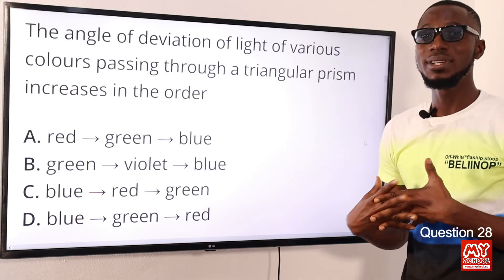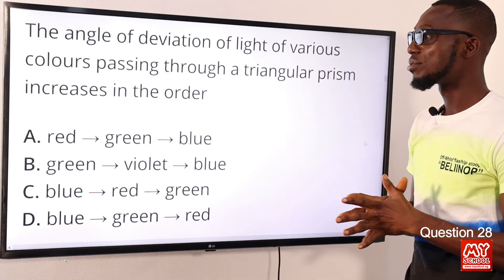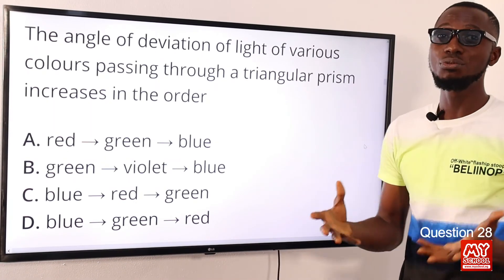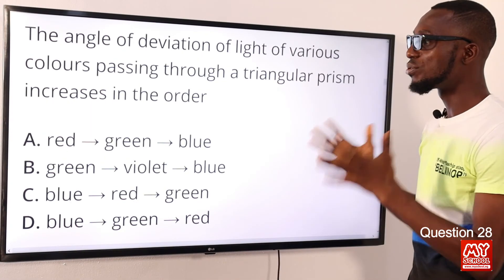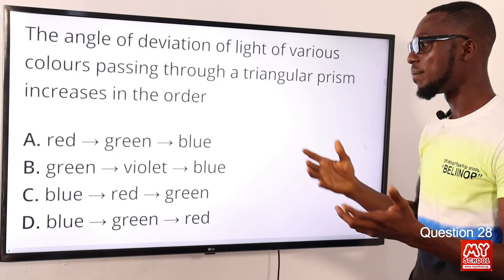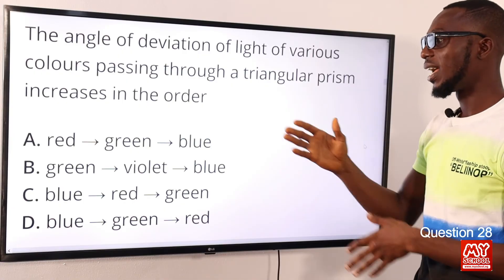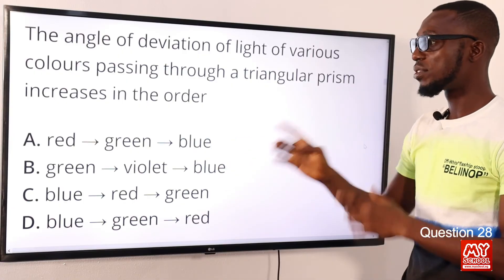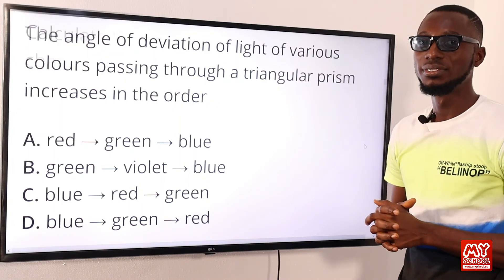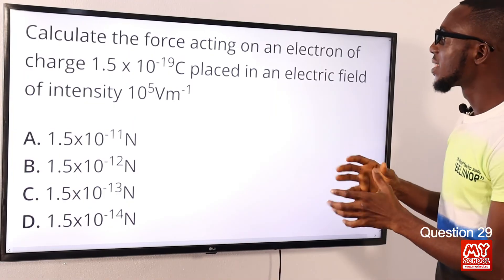Question 28: The angle of deviation of light of various colors passing through a triangular prism increases in what order? We are looking for the order from least deviation to most deviation. Red is least deviated, moving down to violet, following the sequence ROYGBIV — red, orange, yellow, green, blue, indigo, violet. Starting from red and including blue, the correct option is A: red, green, and blue.